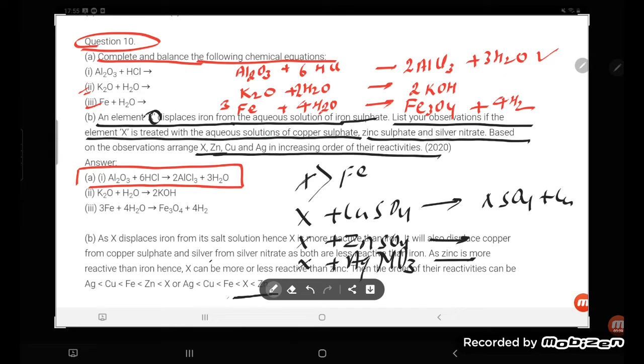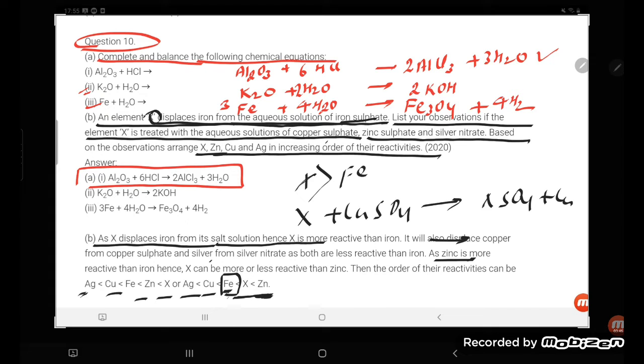So zinc will be most reactive, then X, because they are saying zinc sulfate, silver nitrate, X is treated with aqueous solution of copper sulfate, zinc, because X displaces the iron. So where is the position of iron? Is here. But zinc is more top priorities, copper, Ag, these are there the sequence.